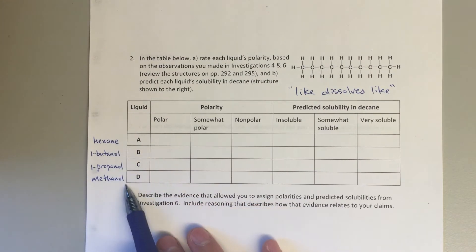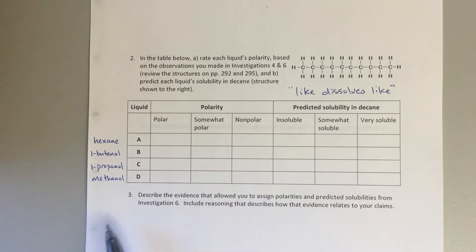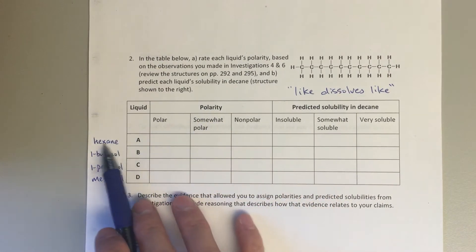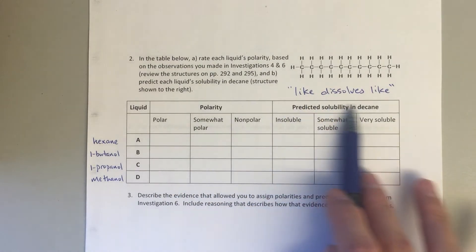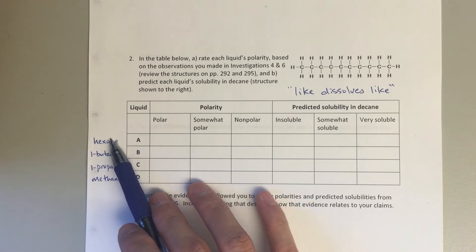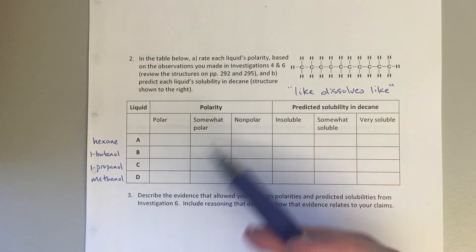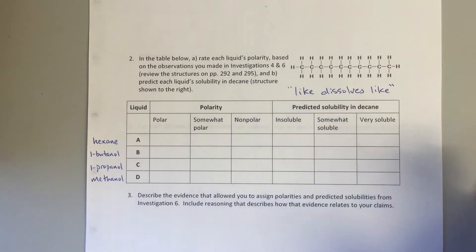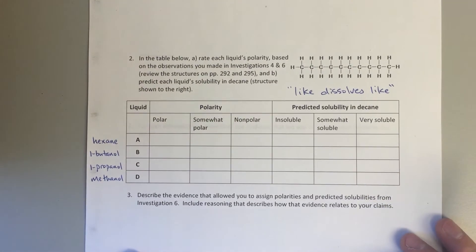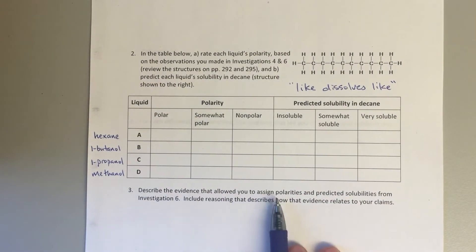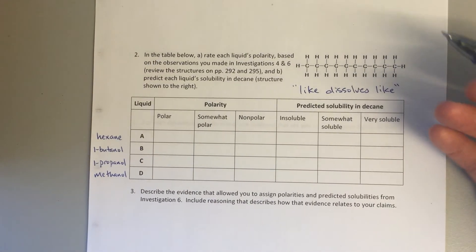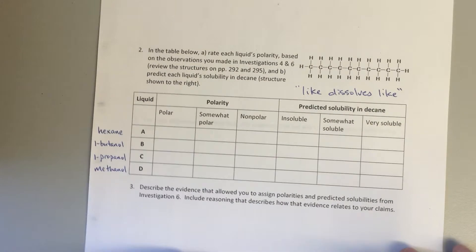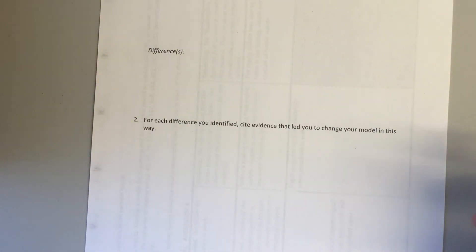So hexane, butanol, propanol, and methanol—those are our liquids A, B, C, and D. The first thing we want you to do is identify their polarity. Do you think hexane, if you go back and look at the structure, is polar, somewhat polar, or nonpolar? Do you think methanol is polar, somewhat polar, or nonpolar? So categorize these, and then you're going to use this sort of idea of like dissolves like to say, well, do I think hexane will interact with decane? Are they both similar, are they both nonpolar, or do they have more polar versus nonpolar character? Work on that. Question number three: Describe the evidence that allowed you to assign polarities. So again, this is all that reasoning—why do we say something is nonpolar, why do we say something is polar? I think that soap example again illustrates a lot of that nonpolar versus polar character.